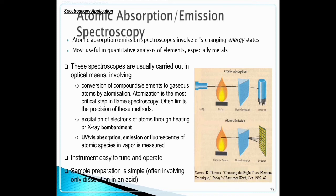These spectroscopes are usually carried out in optical means, involving conversion of compound elements to gaseous atoms by atomization. Atomization is the most critical step in flame spectrometry and often limits the precision of these methods.